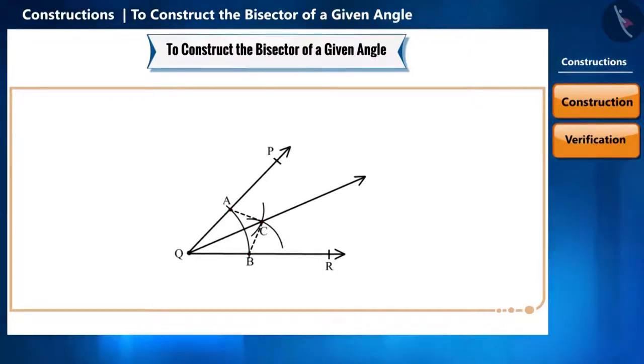Now, we have two triangles, triangle AQC and triangle BQC. Notice that here angle PQC and angle AQC are depicting the same angle. Similarly, angle RQC and angle BQC are also depicting the same angle.